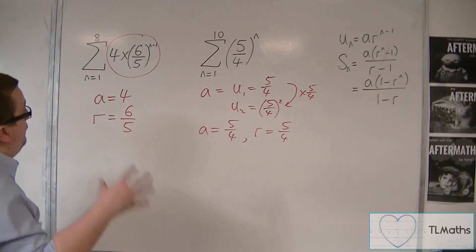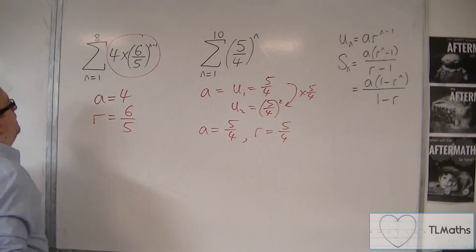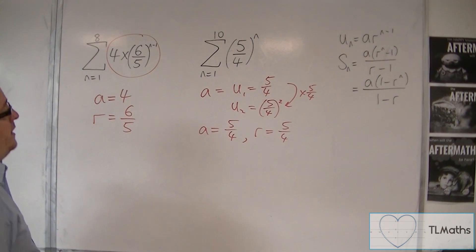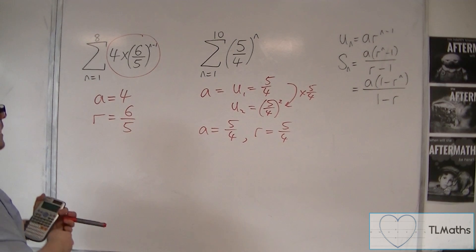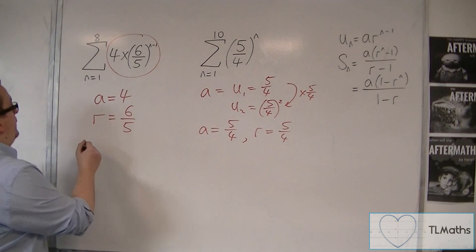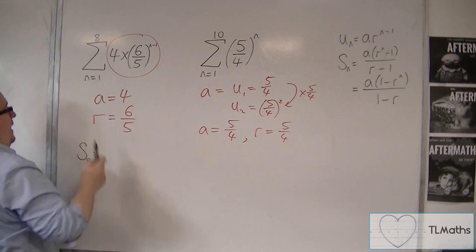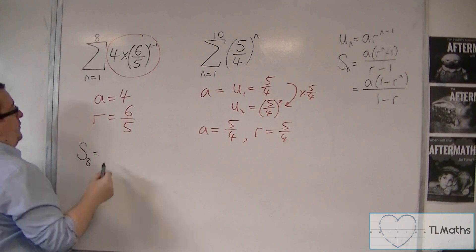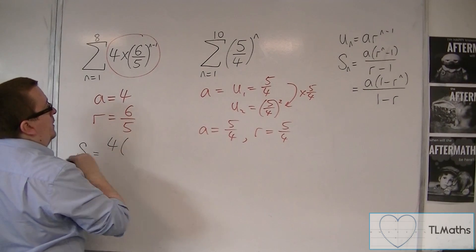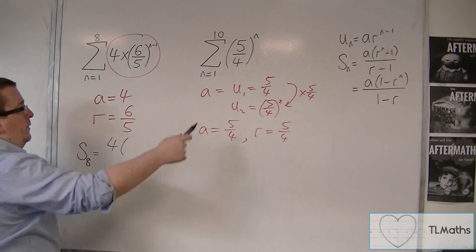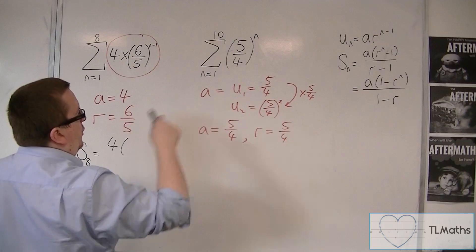So if we get back to this original problem, we have a is 4 and r is 6 fifths. So s8, the sum of the first 8 terms, from 1 to 8, is equal to a times, let's go with the top formula.